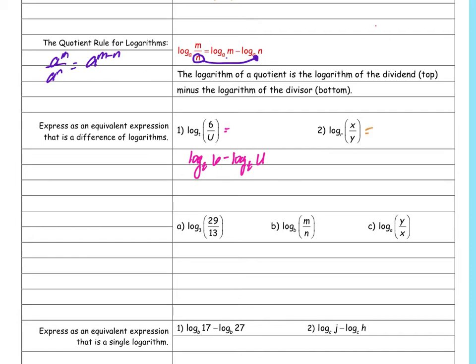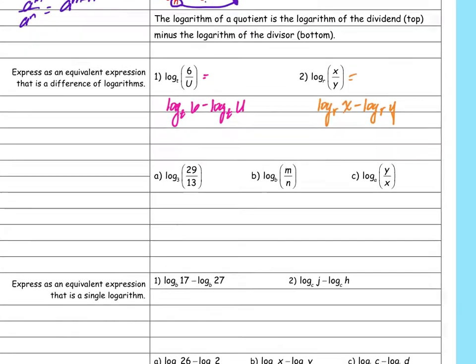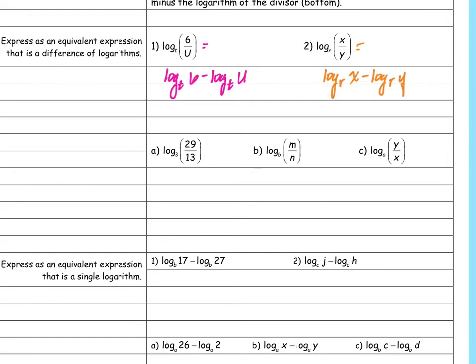For the second example: log base r of x minus log base r of y. Now try three problems. A: log base 3 of 29 minus log base 3 of 13. B: log base b of m minus log base b of n. C: log base a of y minus log base a of x.